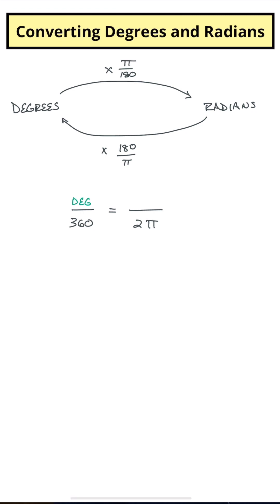So if I had some unknown degrees, I could find out what the radians were for that and vice versa. So how many radians is equivalent to 30 degrees?